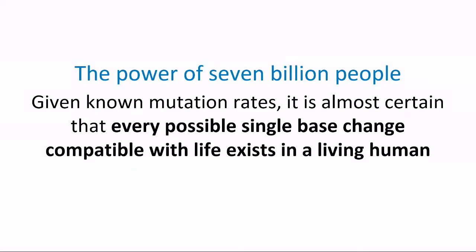This allows us to assess both whether therapeutic inhibition of a gene would be an effective way of treating disease, but also gives us insight into potential safety indicators — whether inhibition would be well-tolerated by humans. The power of the human genetics approach is that we have enormous variation in the natural human population. Given known mutation rates across the genome, it is likely that any given single base change compatible with life almost certainly exists somewhere in the human population, typically in dozens or sometimes hundreds or thousands of individuals.